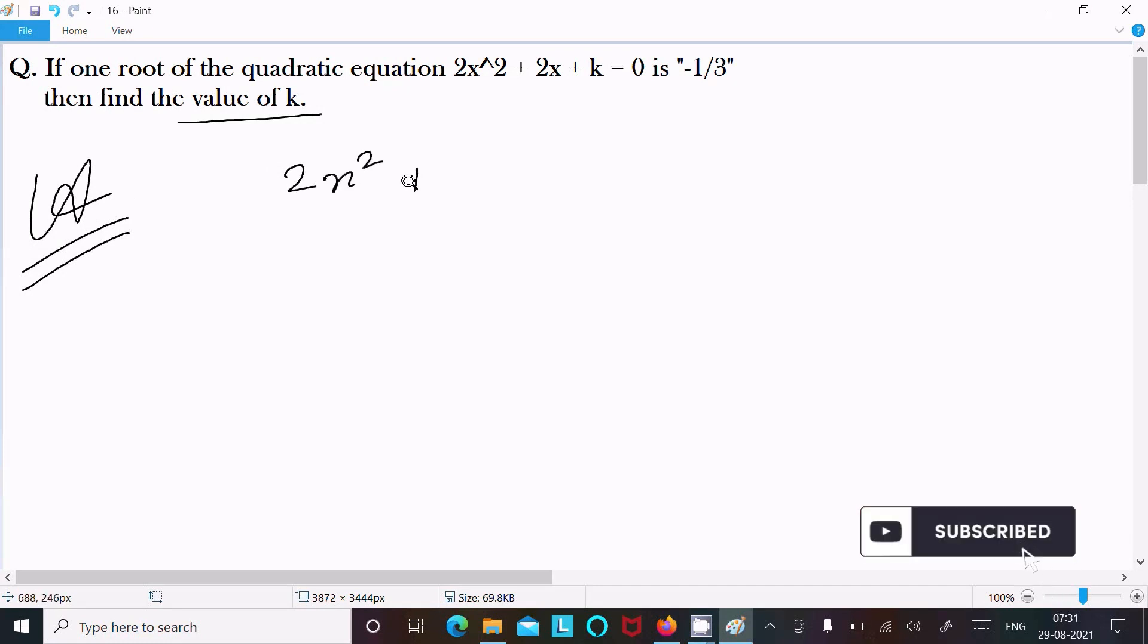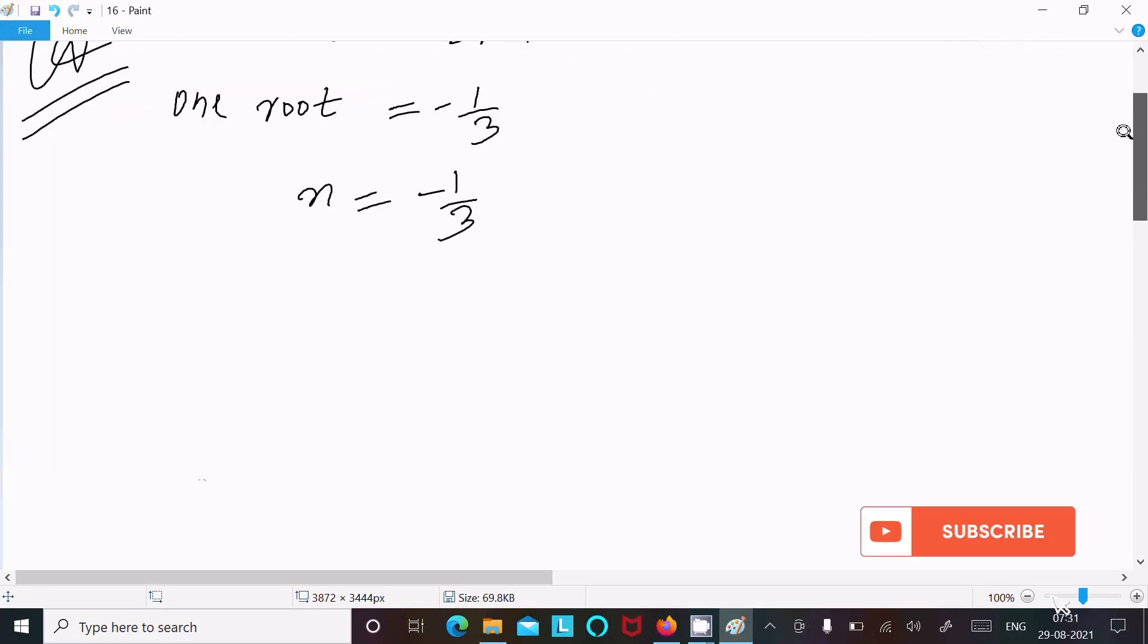+ 2x + k = 0. Now, one root = -1/3, or we can say x equals the first root, -1/3. Let's assume this is equation 1.